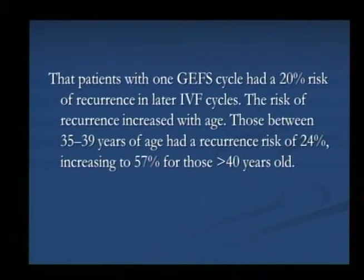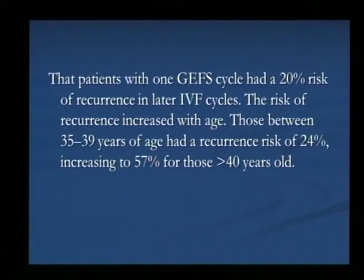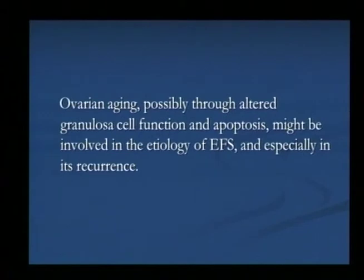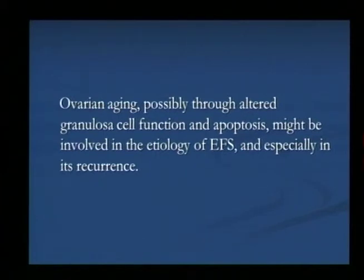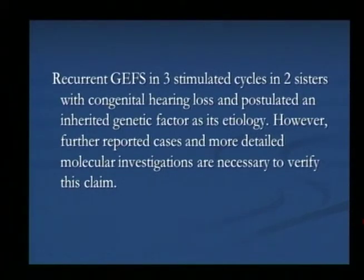Once a patient experiences this, you can counsel them that they have about a 20% risk of recurrence related to IVF cycles, and the risk of recurrence increases with age. In ladies aged 35 to 39 years, the risk is 24%, but it is 57% for those over 40 years old. Ovarian aging leading to altered granulosa cell function is involved in the etiology and especially in its recurrence. The recurrence of this condition in three stimulated cycles in two sisters with congenital hearing loss has been reported, postulating an inherited genetic factor, though more cases and detailed molecular investigations are necessary to verify this.